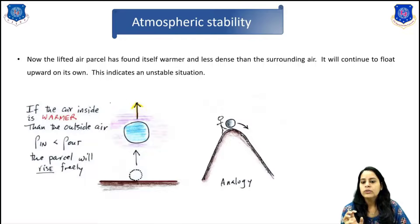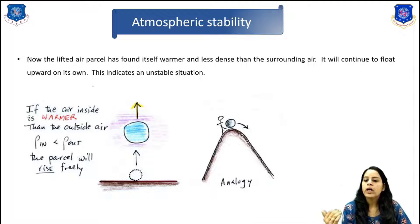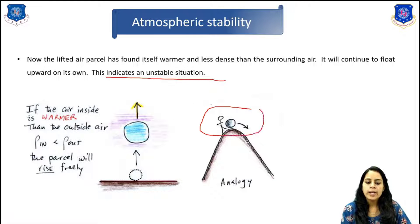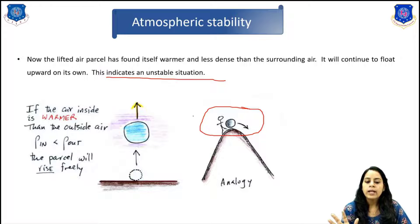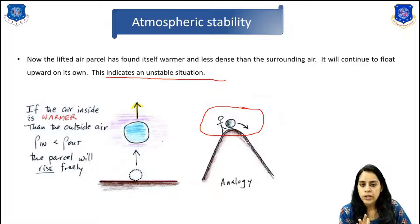Now, if the lifted air parcel finds itself warmer and less dense than the surrounding air, it will continue to float upward on its own — this indicates an unstable condition. Here on screen you can see the rock analogy for this condition: after being pushed, the rock does not come back to its original position. This means it is an unstable condition.